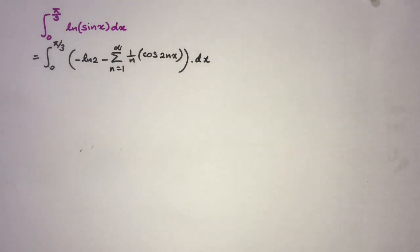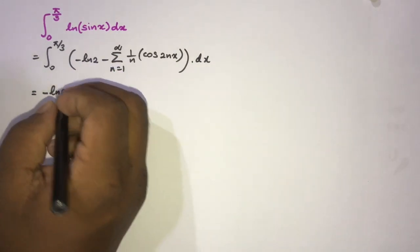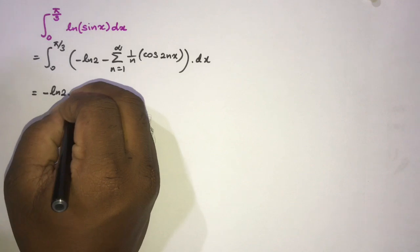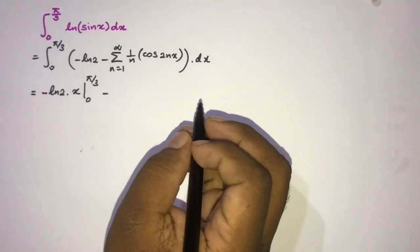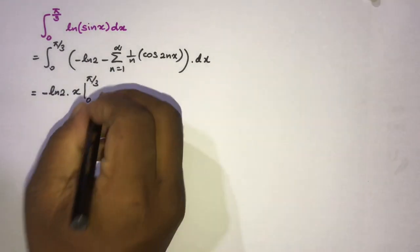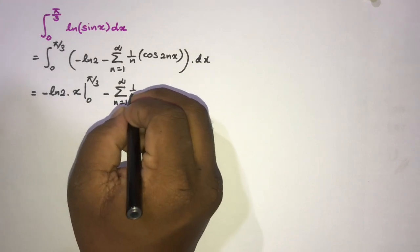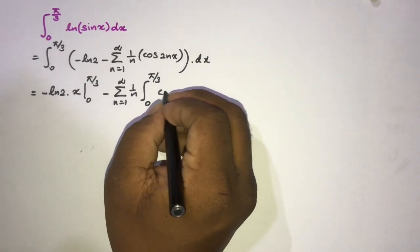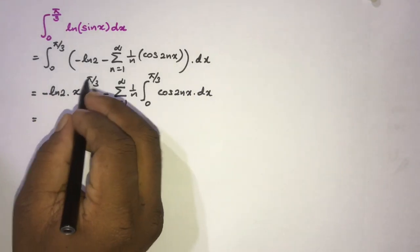We can split this integral into two different integrals. Since minus ln(2) is a constant, we get minus ln(2) times the integral from 0 to π/3 of dx, minus the sum from n=1 to infinity of (1/n) times the integral from 0 to π/3 of cos(2nx) dx.